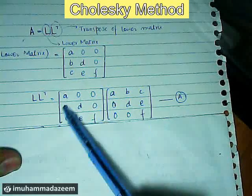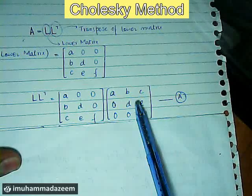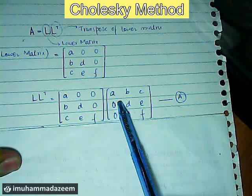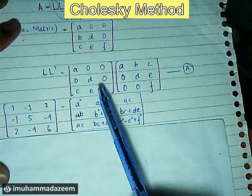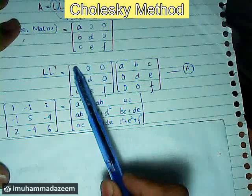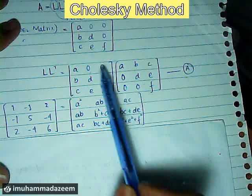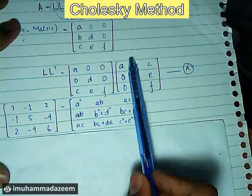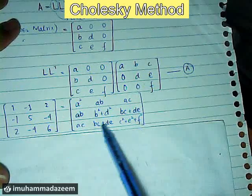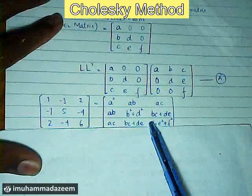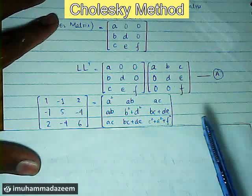Putting this model into the formula, L times L-transpose gives us this result. We can multiply this out and equate it to matrix A — for example, this row times this column gives a-squared, and similarly a times b, and we can easily multiply these things here.